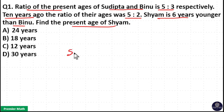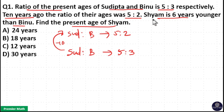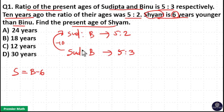Here, the ratio of ages of Sudheeta and Binu: their present age ratio is 5:3. And 10 years ago, their ages ratio was 5:2. Shyam is 6 years younger than Binu. So this is the present age ratio and this is the 10 years ago ratio.